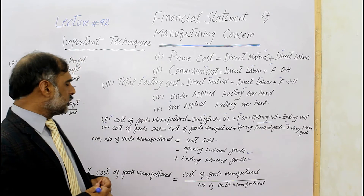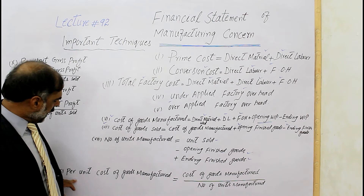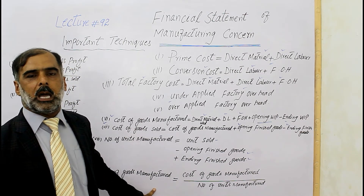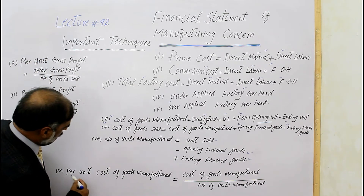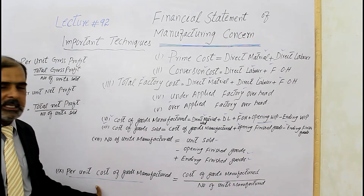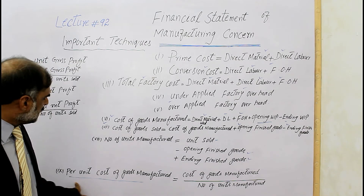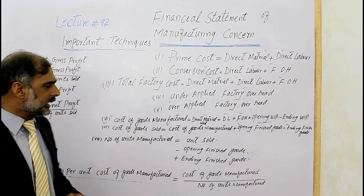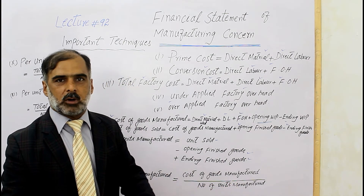We can also calculate per unit cost. Per unit cost of goods manufactured is determined by dividing the total cost of goods manufactured by the number of units produced. For example, if a company has 10,000 units produced, we can see how much the per unit cost is.